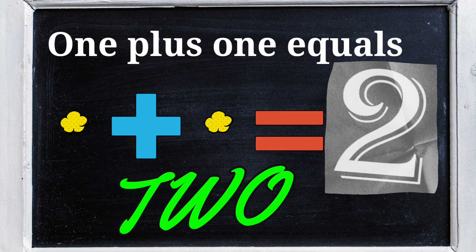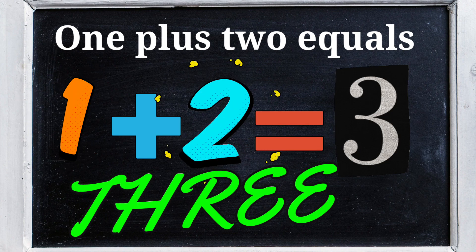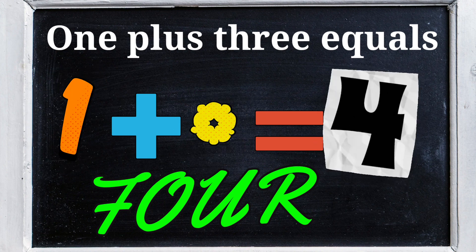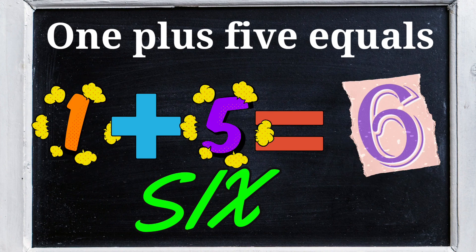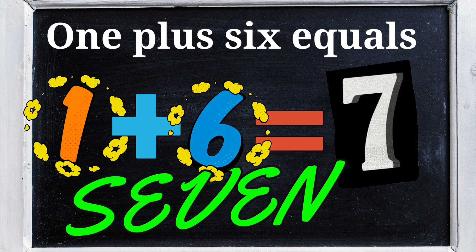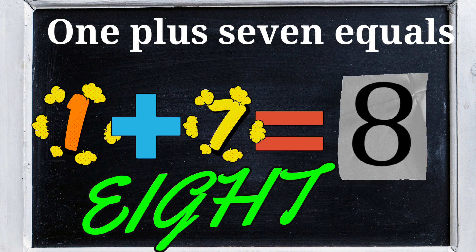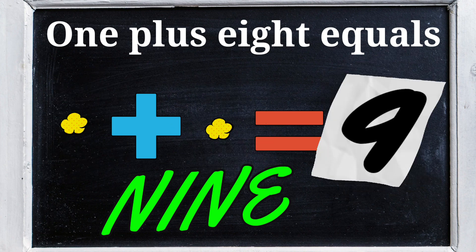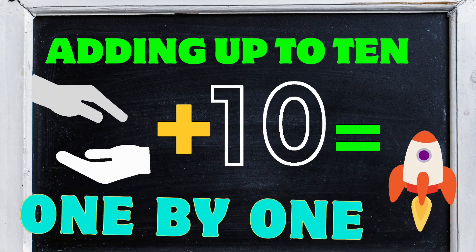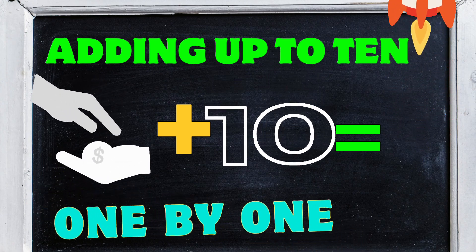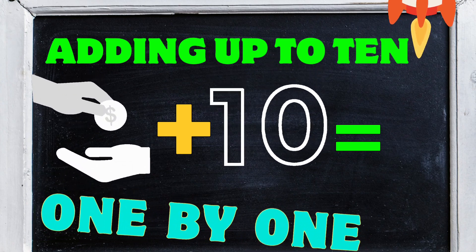1 plus 4 equals 5, 1 plus 5 equals 6, 1 plus 6 equals 7, 1 plus 7 equals 8, 1 plus 8 equals 9, and 1 plus 9 equals 10. Adding up to 10, 1 by 1.